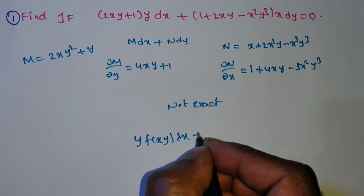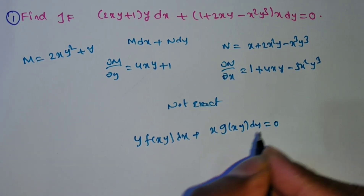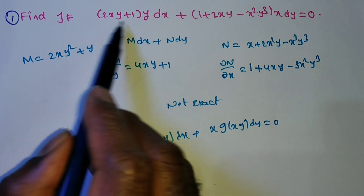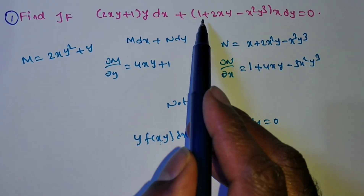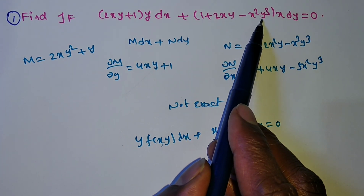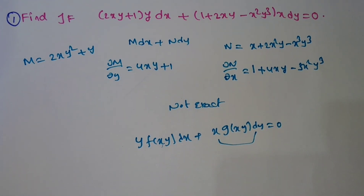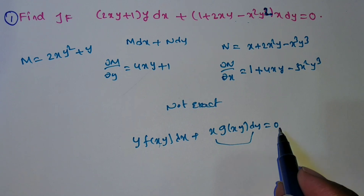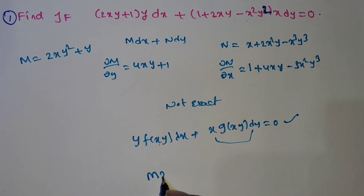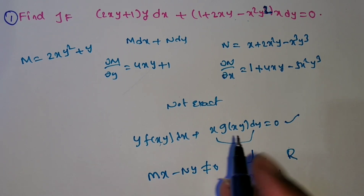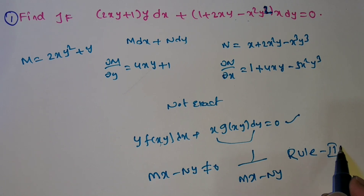If non-homogeneous, go to the next method. The form is y·f(xy) dx + x·g(xy) dy = 0, where the function is only in terms of xy. Check: y dx — is it a function of xy? xy power 1, xy power 0 — yes, it is a function of xy only. Similarly verify N: x dy is there. Is g a function of xy? x²y² = (xy)², xy power 1, xy power 0 — yes, satisfying. Then verify Mx − Ny ≠ 0. If not equal to 0, the integrating factor is 1/(Mx − Ny). So this is Rule 3.